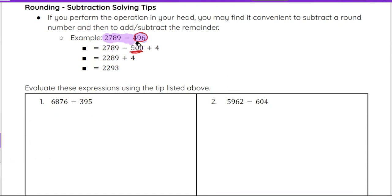And even more specifically, you're really looking at the 7 in the hundreds place and the 5 here because these are zeros. So 2789 minus 500 is 2289. We still have to add in that 4 to compensate for having subtracted more than we were supposed to. So 2289 plus 4 gives us 2293.